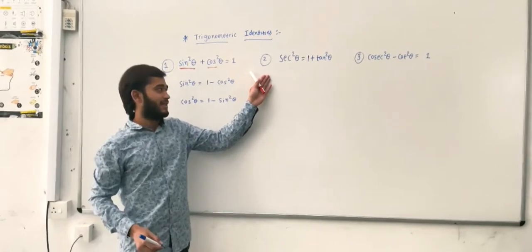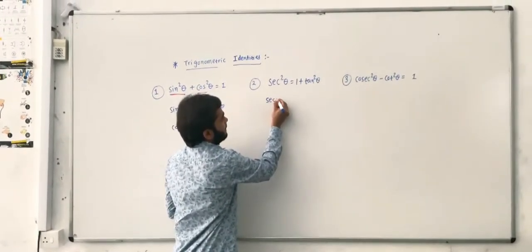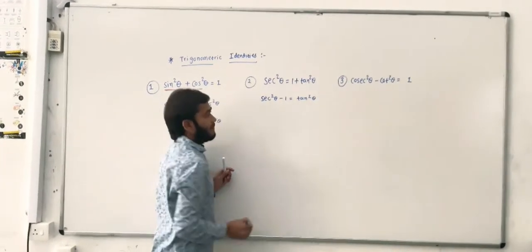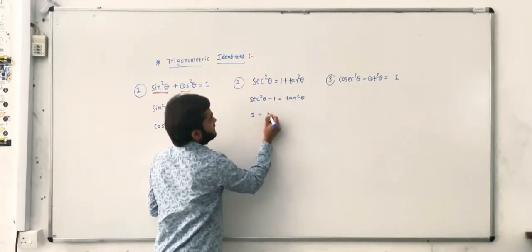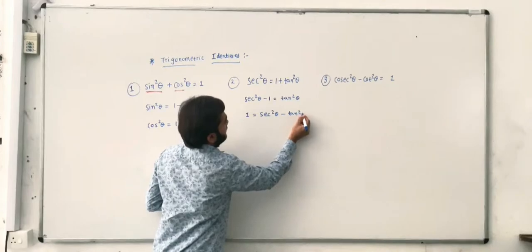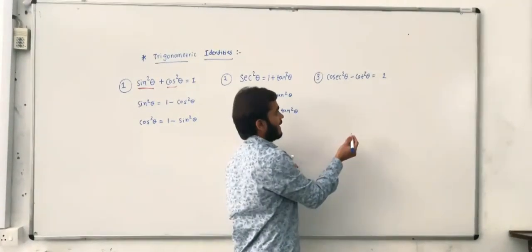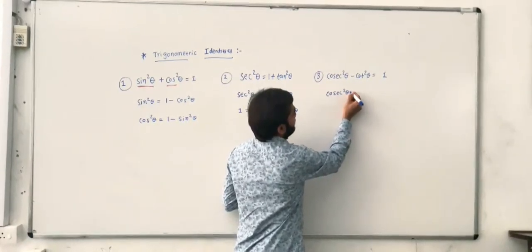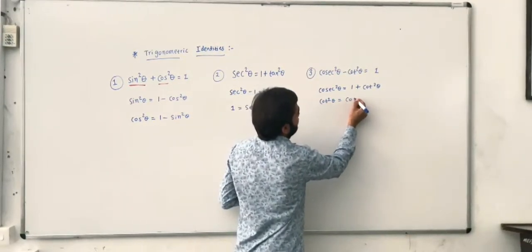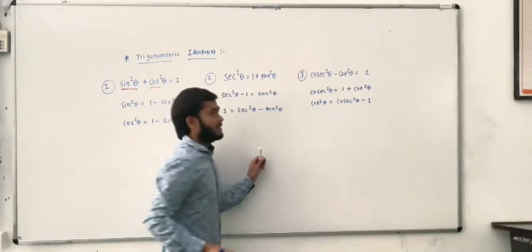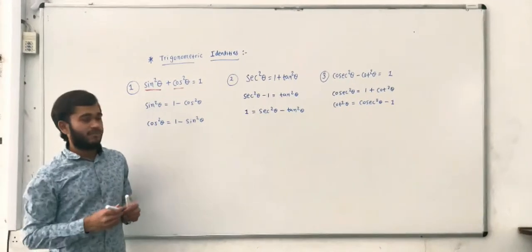The second identity of trigonometry is sec²θ = 1 + tan²θ. If we rearrange, then sec²θ − 1 = tan²θ, and we can also write 1 = sec²θ − tan²θ. The third identity is cosec²θ − cot²θ = 1. From this, cosec²θ = 1 + cot²θ and cot²θ = cosec²θ − 1. So these are the nine forms of equations that can be used as formulas to solve examples.